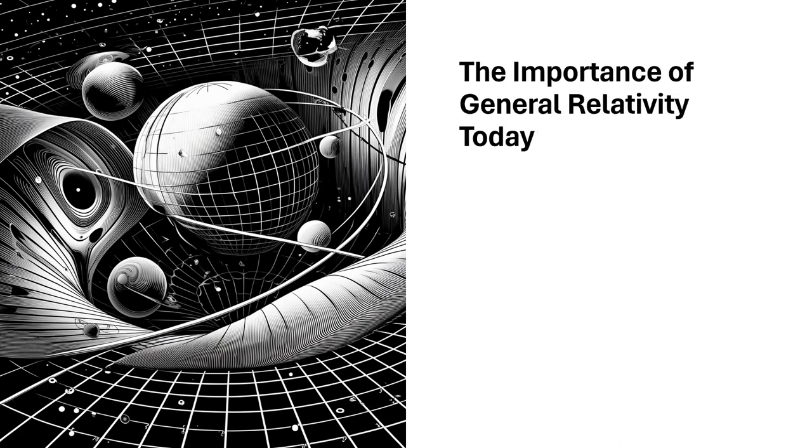General Relativity is not just a theory of the cosmos—it impacts our daily lives. For instance, GPS (Global Positioning System) technology in our smartphones adjusts for the effects of General Relativity to provide accurate location information, especially when using Food Panda. Understanding this theory is crucial for advancing our technology and expanding our view of the universe.